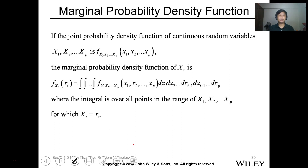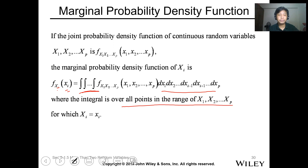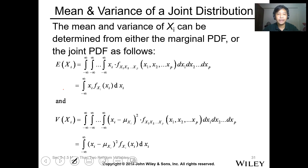For marginal probability with multiple variables, you integrate everything except the specific variable xi. After integrating all other variables, what remains is a function of xi alone. This is the marginal PDF for a specific value of xi, similar to the two-variable case, but applied across all p variables.